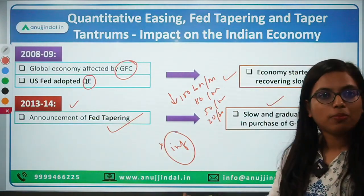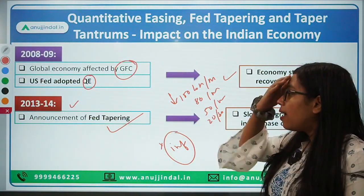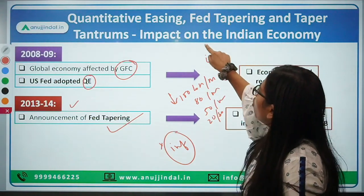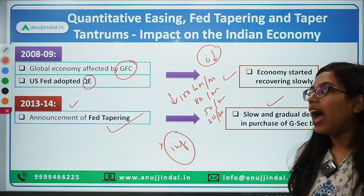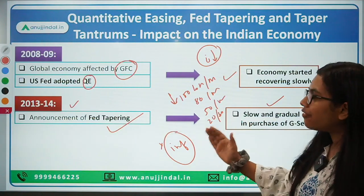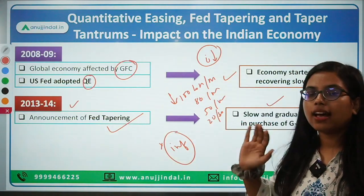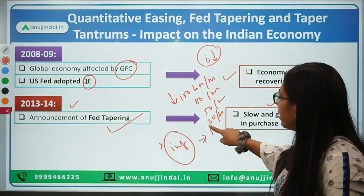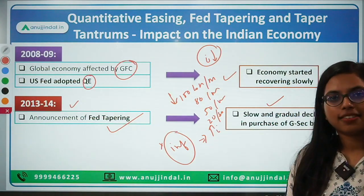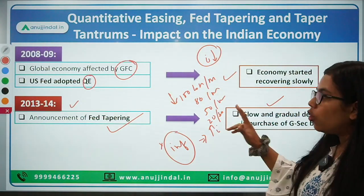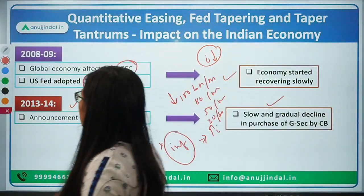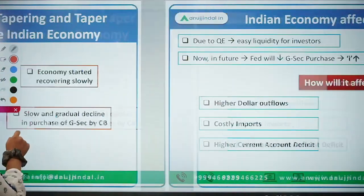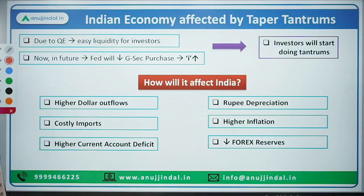If there is easy monetary policy, that means the rate of interest in that economy will be very low. However, if Fed tapering is being started by the Federal Reserve, then that will result in increasing the interest rate. Now let's move forward and talk about the third term — taper tantrums.